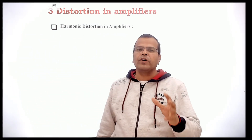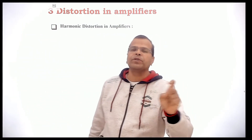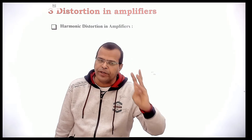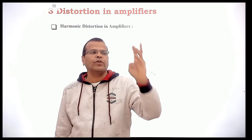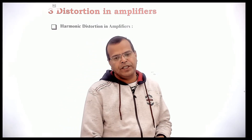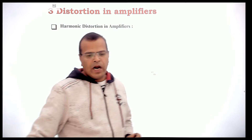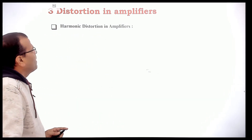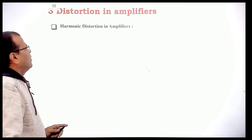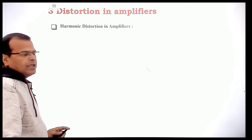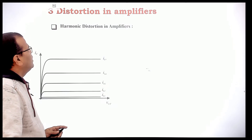That finishes the different types of distortion. There are three types: amplitude distortion (non-linear distortion), frequency distortion, and phase distortion. We have seen the different reasons for each of these distortions.